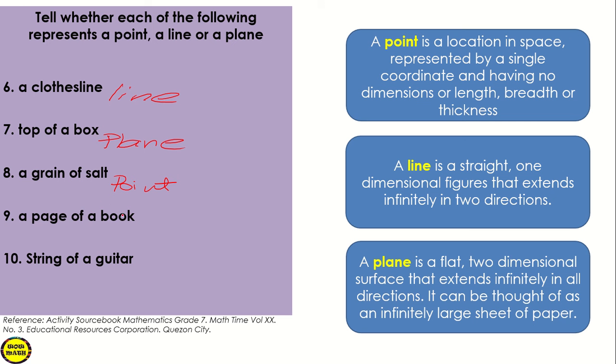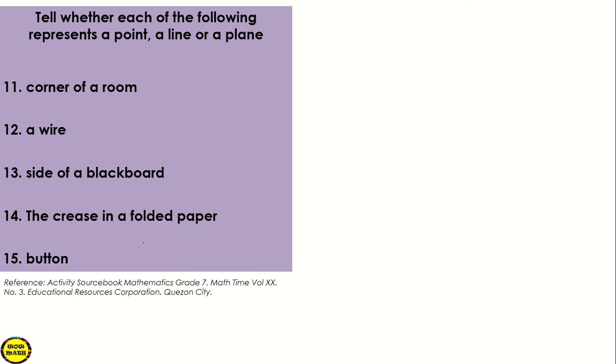A page of a book. This is plane. A page of a book, this is plane. String of a guitar. This is line. Next, corner of a room. Corner of a room, so this is point.